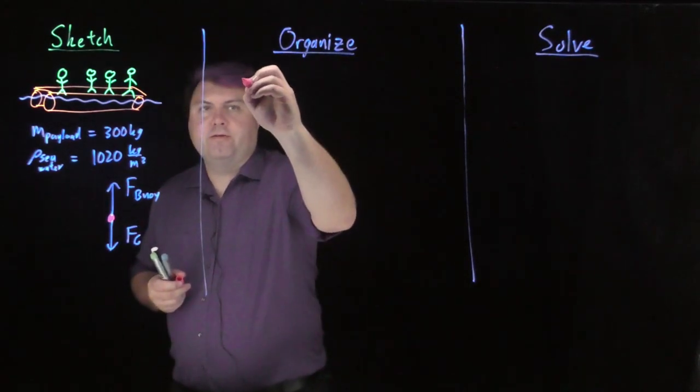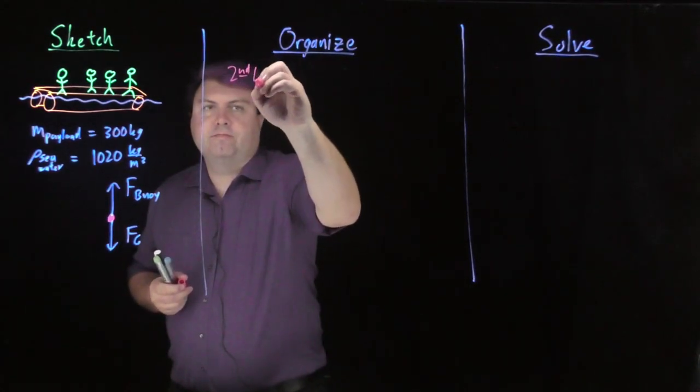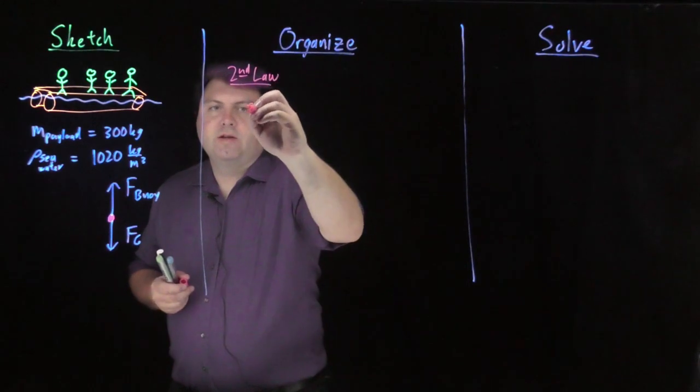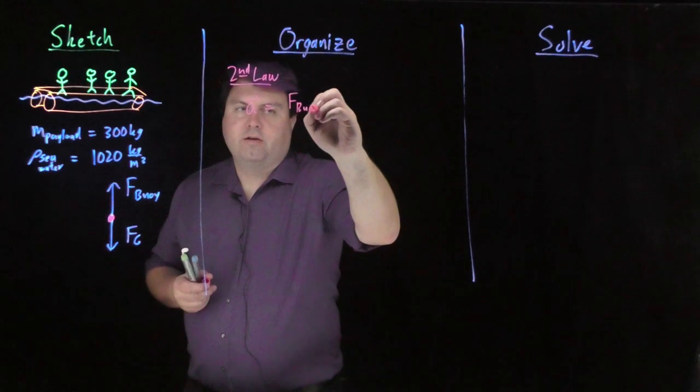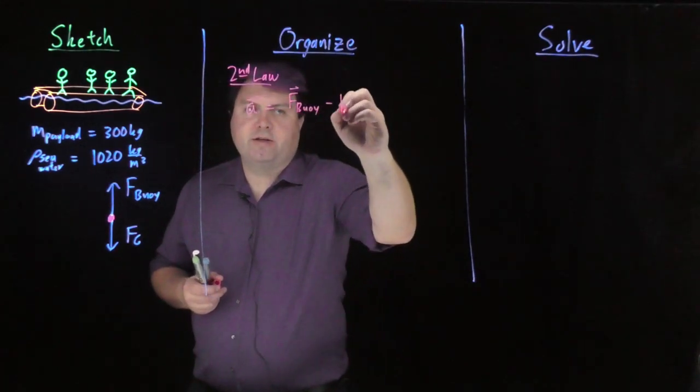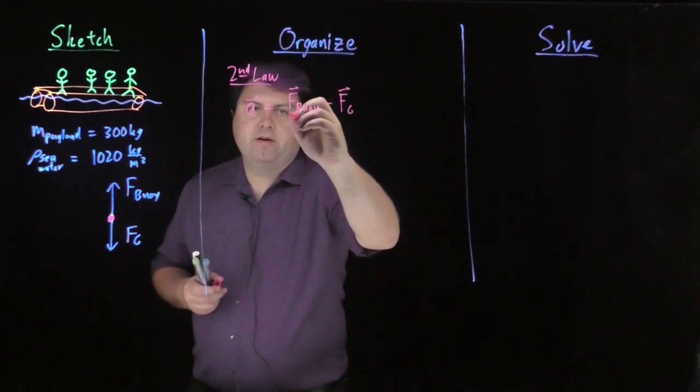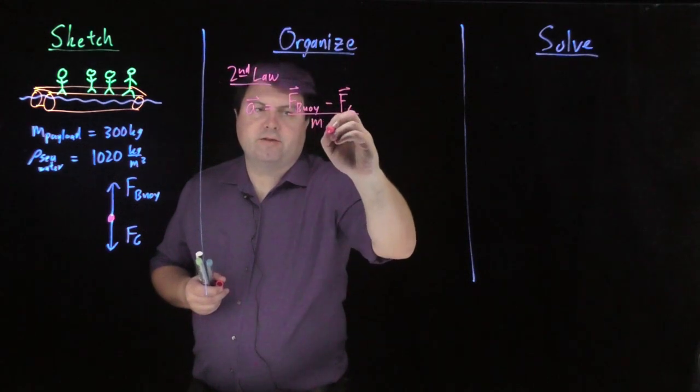So in our organized step, we want to do Newton's second law. So we have that our acceleration is going to be the force of buoyancy minus the force of gravity over the mass of the whole thing.